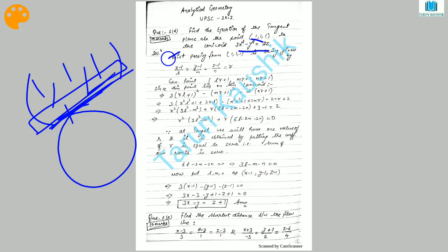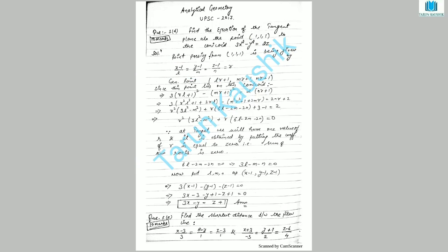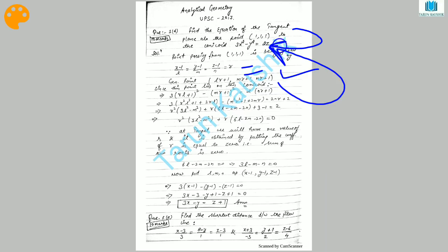Any line which is passing from the point (1,1,1) is given by (x-1)/L, where L, M, N are the direction ratios of this line. To proceed, just calculate a generalized point by putting that equals to R. The generalized point on this line is LR+1, MR+1, NR+1, and this generalized point will satisfy the conicoid too.